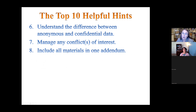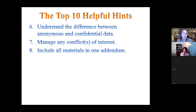Helpful hint number eight: make sure all materials are in one addendum. Take all the supporting documents — surveys, interview questions, recruitment materials, letters of cooperation, informed consent — merge them into a single PDF or Word document. When the IRB receives the packet, we have the application and then we open the addendum alongside it. Submitting 20 separate attachments is cumbersome. One addendum makes it an easier review process.